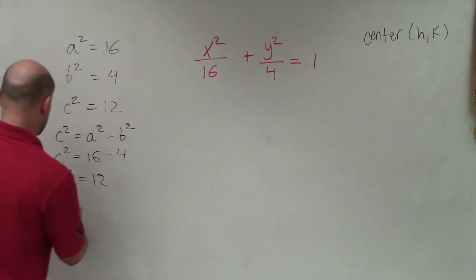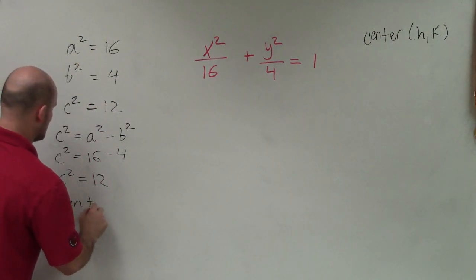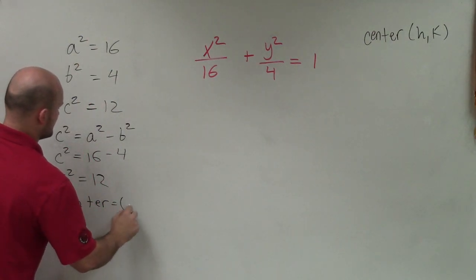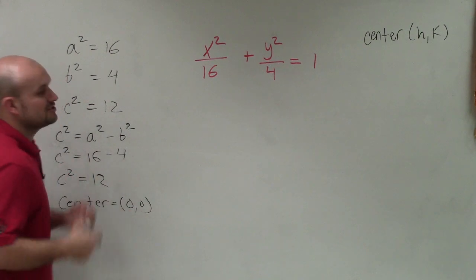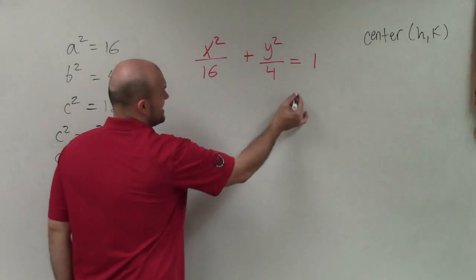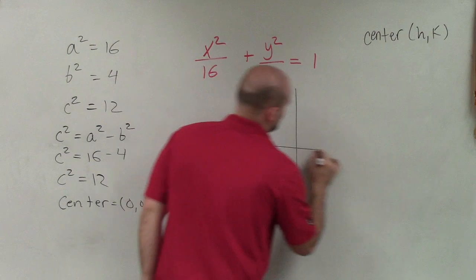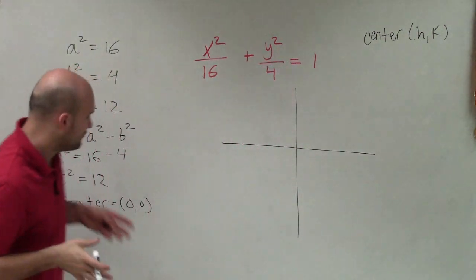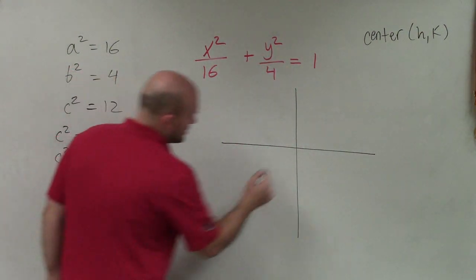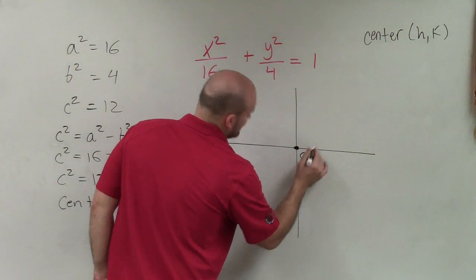So in this case, I can also now say that my center is equal to 0 comma 0. So now let's go and plot the ellipse based on the information that we have. So first of all, my center is at 0, 0. So I'm going to plot at point 0, 0 and write center.